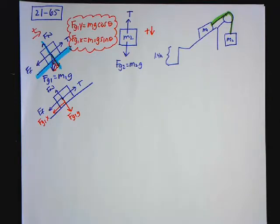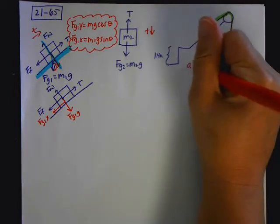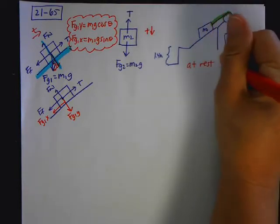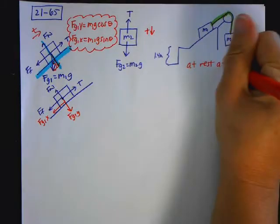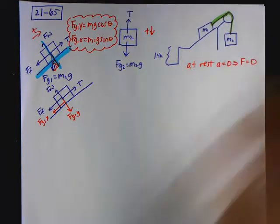What does this problem say? It says determine the largest possible M2 that will allow the system to remain at rest. So first of all, for it to remain at rest, and we're not doing it as a system, we're going to do individually. At rest means that it's not moving. The acceleration is zero, but that means when I sum forces, that the forces are zero.